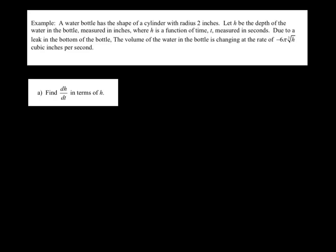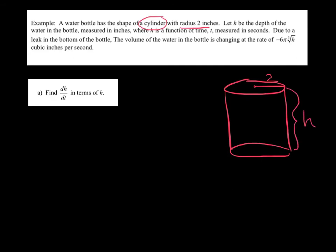Our last question for the night will be a two-part question. Here we go with part A. A water bottle has the shape of a cylinder with a radius of 2 inches. So let's go ahead and sketch that. I've got a nice cylinder. And they're telling me their radius is 2. Let h be the depth of the water. There's my h. Measured in inches where h is a function of time measured in seconds. Due to a leak at the bottom of the bottle, the volume of water of the bottle is changing at a rate of negative 6 pi cubed root of h cubic inches per second. So notice they tell you it's a rate, and they give it away by saying cubic inches. So it should be clear that that's dv dt. Negative 6 pi cubed root of h.